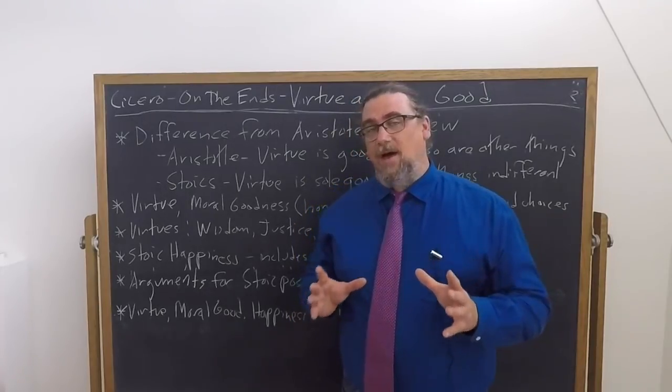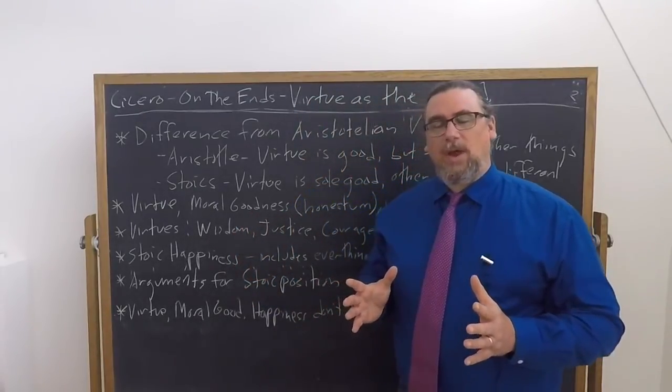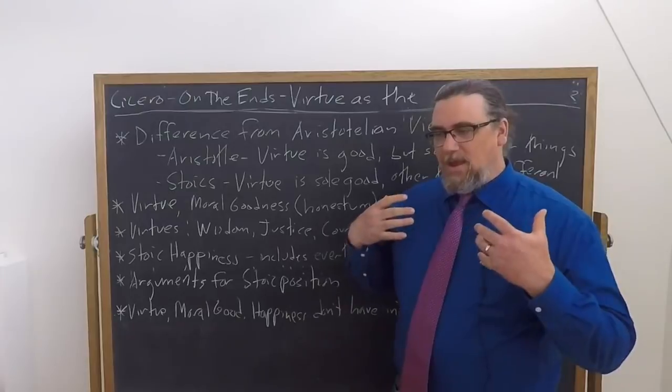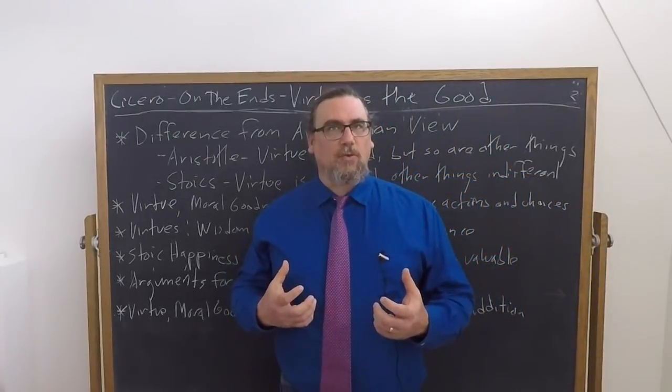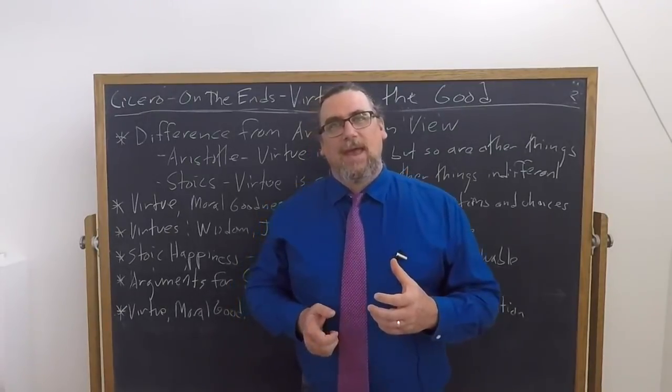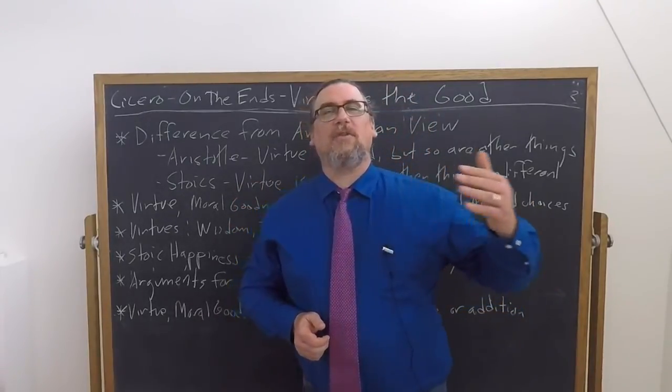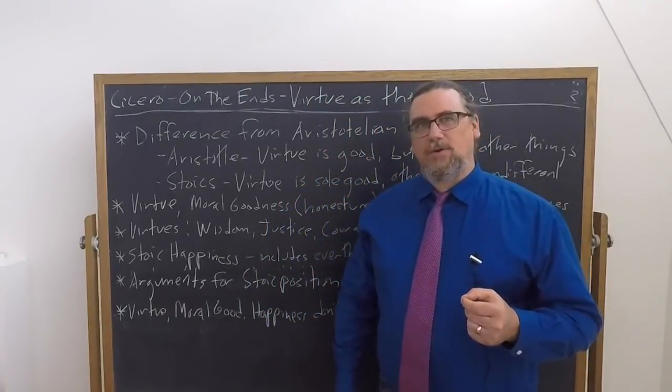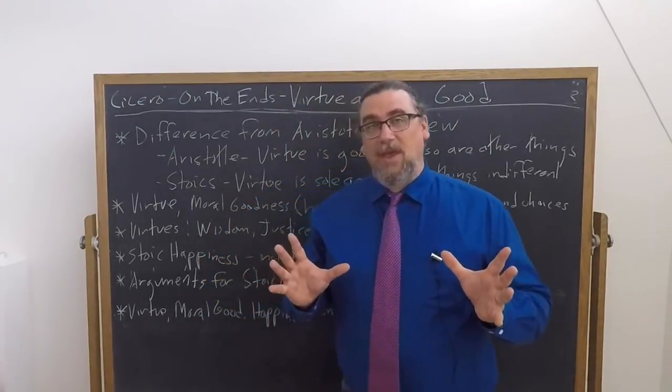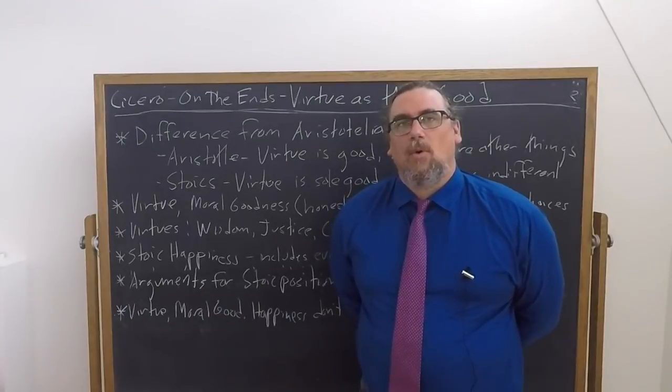In book three of Cicero's On the Ends, Cato, the Stoic philosopher, is arguing for what we can call the absolute primacy of virtue. What this means is that he's saying that virtue is really the good, the thing that is good for us as human beings, and everything else, if it has any value at all, it's reflected or derivative from that of virtue. So nothing else really has intrinsic positive value.